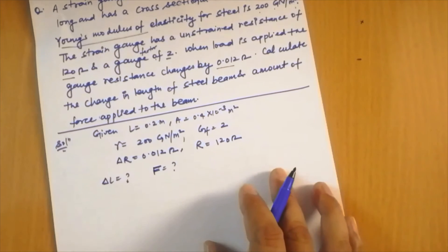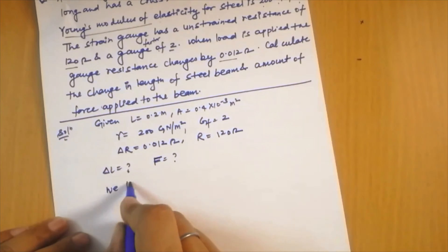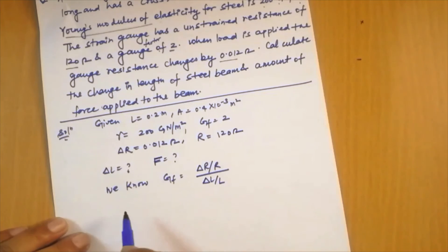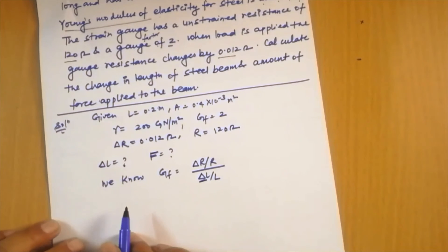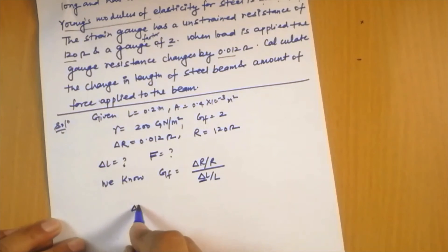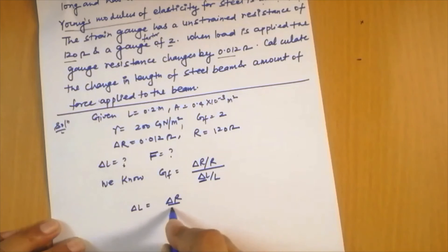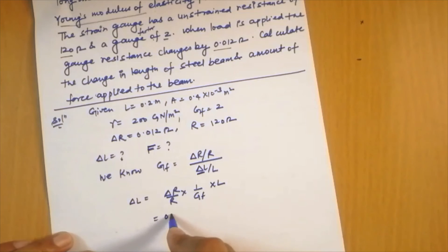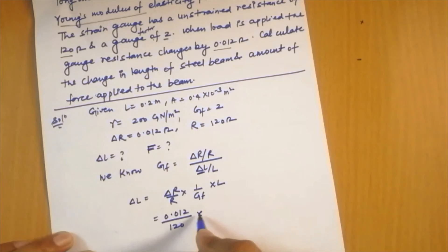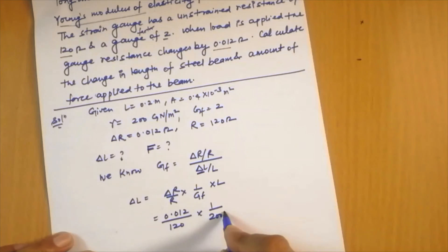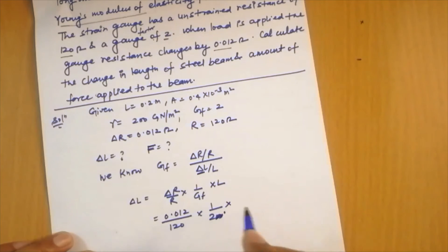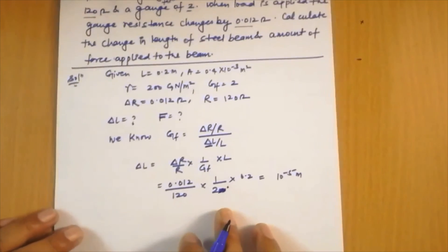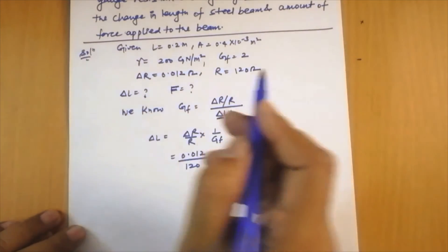To calculate delta L, we use the gauge factor formula: gauge factor equals delta R by R divided by delta L by L. Rearranging gives delta L equals (delta R divided by R) times (1 divided by gauge factor) times L. Substituting: delta R is 0.012, R is 120, gauge factor is 2, and L is 0.2. This gives delta L equals 10 to the power minus 5 meters.